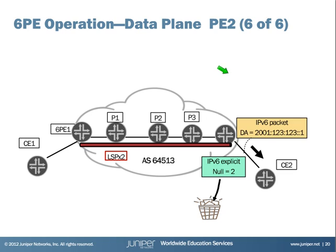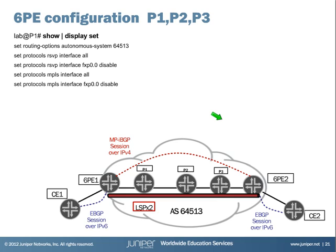Then the 6PE2 router drops the remaining label and forwards the IPv6 traffic towards CE2 based on its inet.6.0 table. Finally, let's see another benefit of 6PE, which is the configuration — it's really easy to configure.